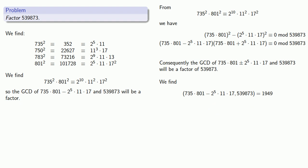Since that's one factor, we can find the other by direct division, giving us the factorization 539873 equals 1949 times 277.